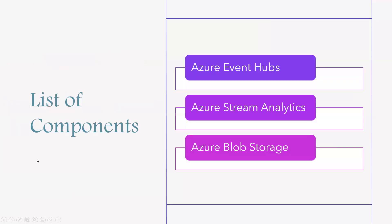Let me start with the list of components needed to design this real-time fraud detection architecture. We need Azure Event Hubs, Azure Stream Analytics, and Azure Blob Storage. If you have any questions on how to deploy these services in Azure, please go to my channel — there are plenty of videos available. You can find how to deploy, configure, and manage access. Just go to the channel and search for Event Hubs, Stream Analytics, or Blob Storage.